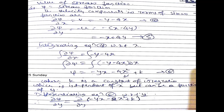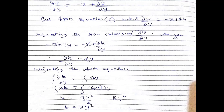Since we integrated with respect to x, k is not a function of x but can be a function of y. Differentiating equation six with respect to y: ∂ψ/∂y = -x + ∂k/∂y. From equation number five, ∂ψ/∂y = -x + 4y. Substituting: -x + 4y = -x + ∂k/∂y, so ∂k/∂y = 4y. The x terms cancel.